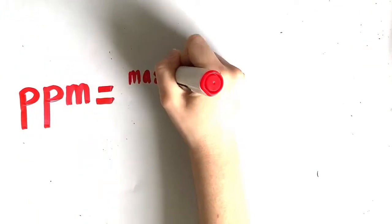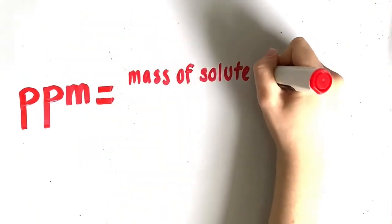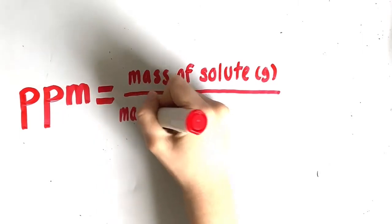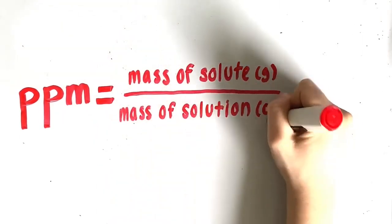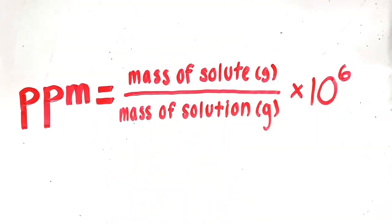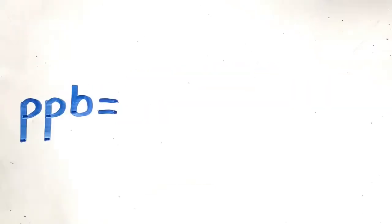The formula for parts per million is PPM equals the mass of the solute in grams over the mass of the solution in grams multiplied by 10 to the power of 6. The reason we use 10 to the power of 6 is because it equals a million.